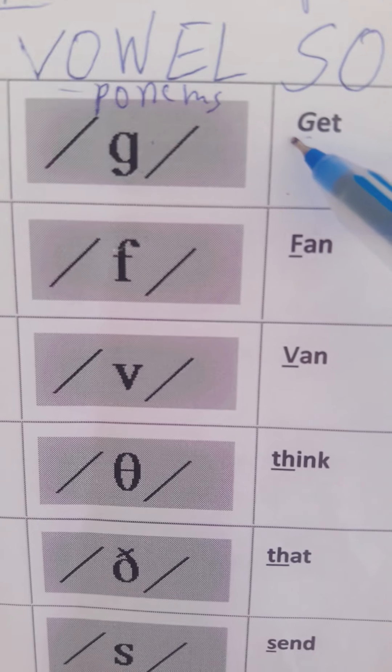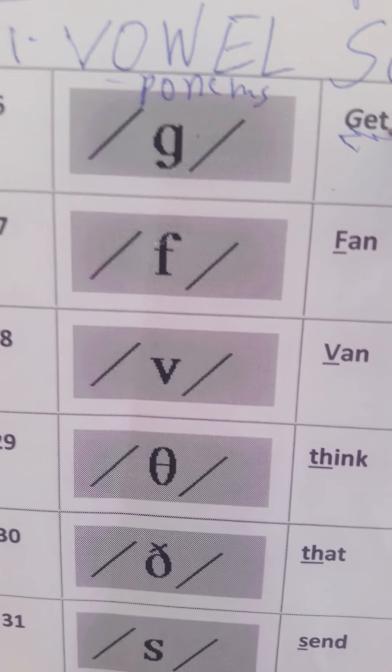The consonant phonemes begin from stress. What is this letter? G. In the spelling G-E-T — 'get' — the sound of G. G means G-A. F-A-N — 'fan' — F-A sound. V-A-N — 'van' — V-A sound.